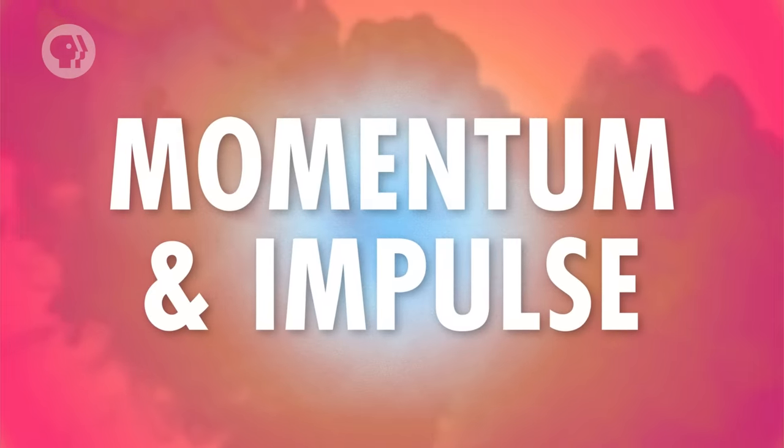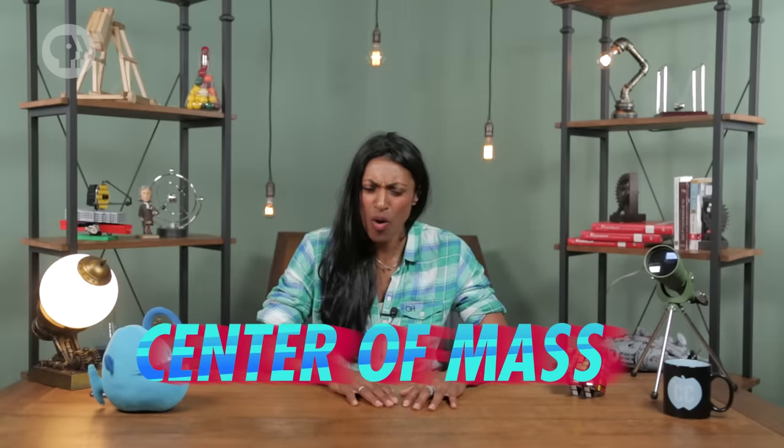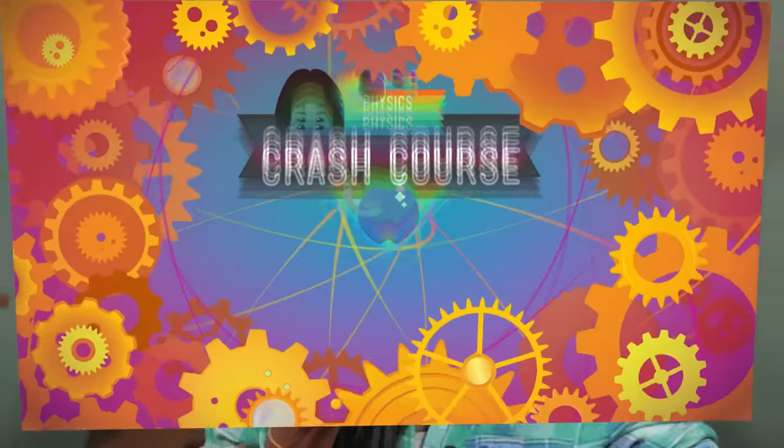To figure out what's happening when objects collide, we'll have to take into account two main qualities: momentum and impulse. We'll also discuss what physicists mean when they talk about center of mass, and why that's important. And we'll have our old friend Sir Isaac Newton to help us out along the way.